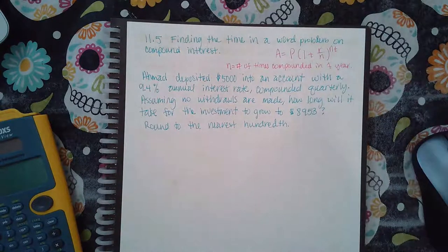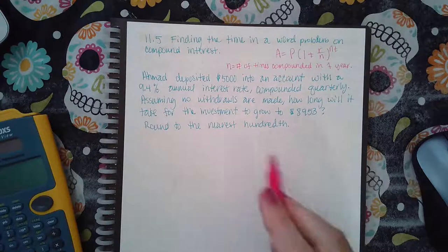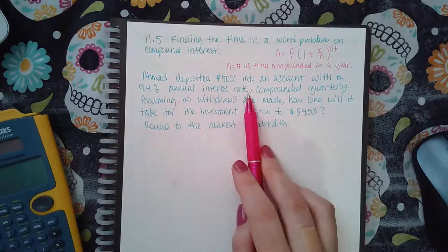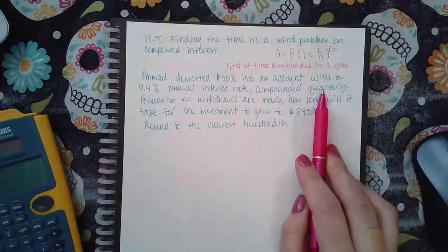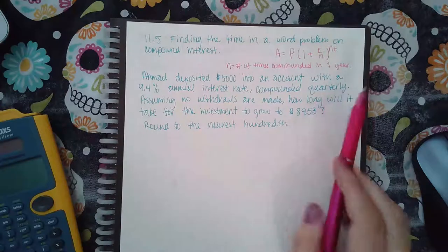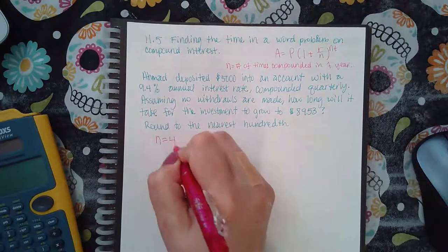So it says Ahmad deposited $5,000 into an account with a 9.4% annual interest rate compounded quarterly. Quarterly means every fourth of a year, so that means that it's compounded four times a year.